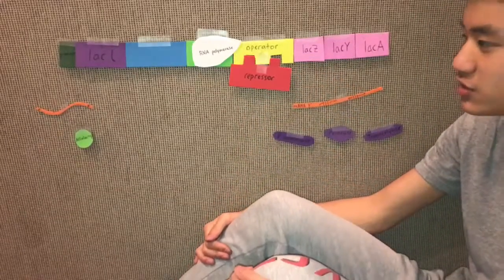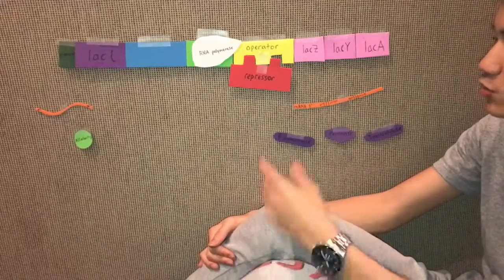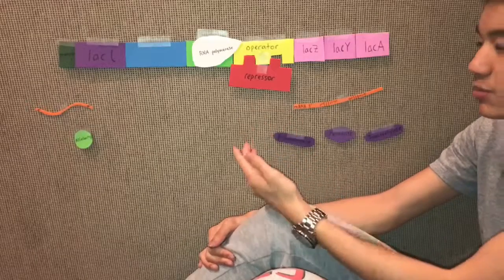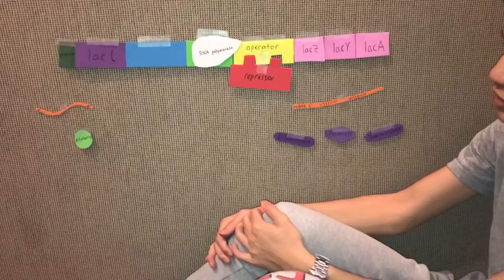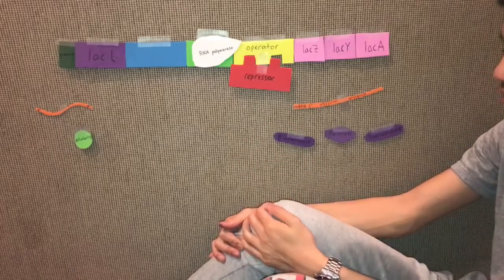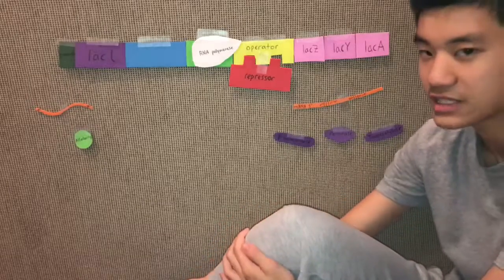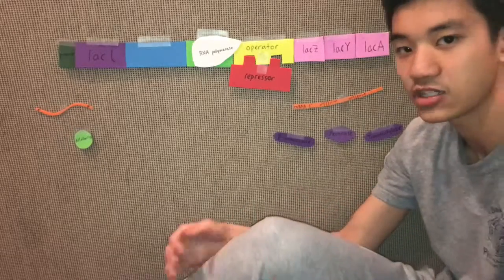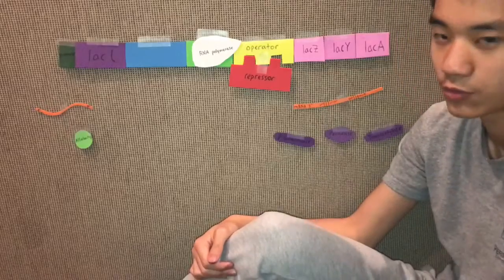The lac operon is very similar to the trp operon in that it uses a repressor to disallow RNA polymerase to transcribe the genes necessary for the synthesis of lactose. However, in this case, the repressor is naturally bound to the operator without the need of a co-repressor.